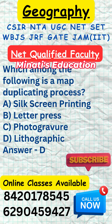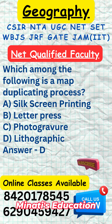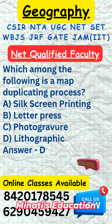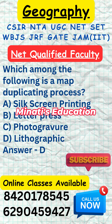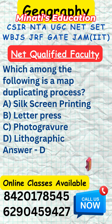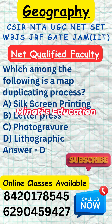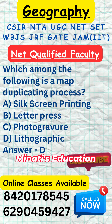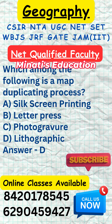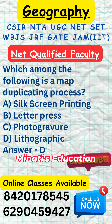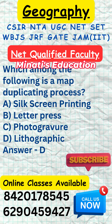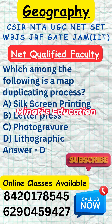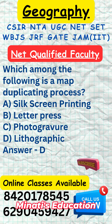Letterpress is a traditional printing technique that involves pressing inked type or images onto paper. It is known for producing high-quality prints with a distinctive tactile impression. While it is not primarily a map duplicating process, it can be used to print maps, along with various other printed materials such as books, posters, and cards. The process involves setting type or images onto a press, inking them, and then pressing them onto the paper to transfer the ink and create the print.